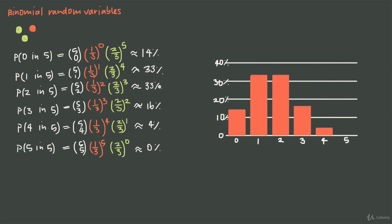What this tells us is that in five trials, we're most likely to pull the red marble once or twice. We're less likely to pull it zero or three times, and it's really unlikely to pull it four or five times. Adding 33 plus 33, there's a 66% chance of pulling the red marble either once or twice — about a two-thirds chance — with a much smaller chance for any other outcome. This is what the probability distribution looks like for a binomial random variable.